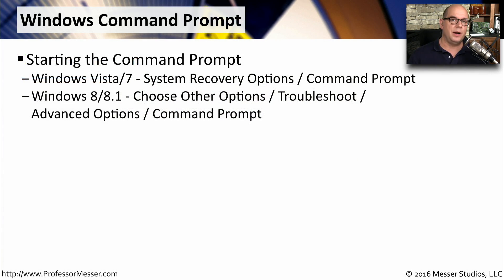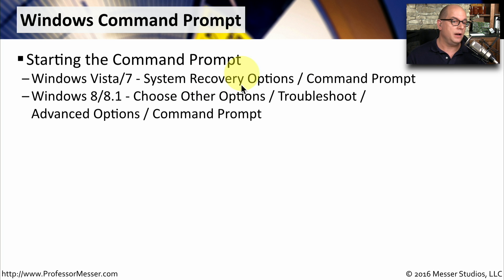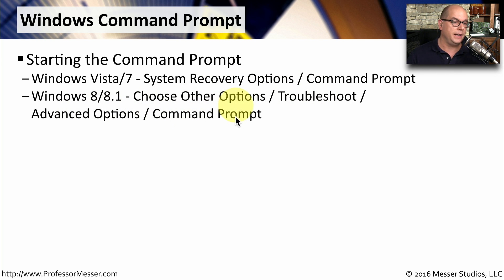If you're having problems with your operating system that you can't fix while the OS is running, you may need to start your Windows Command Prompt and access the operating system before the OS starts. In Windows 7, do this from System Recovery Options and choose Command Prompt. In Windows 8 and 8.1, choose Other Options, then Troubleshoot, then Advanced Options, and finally Command Prompt.